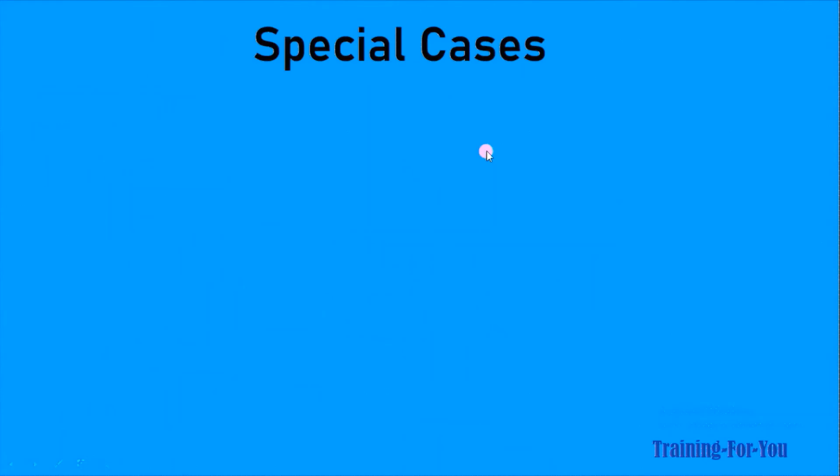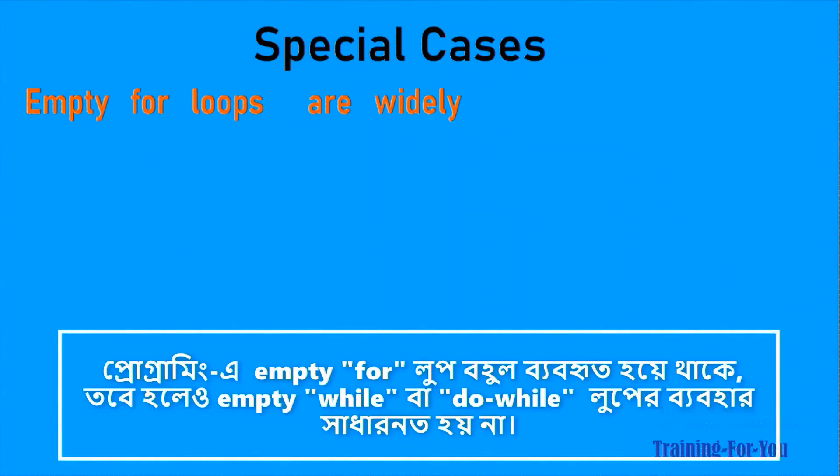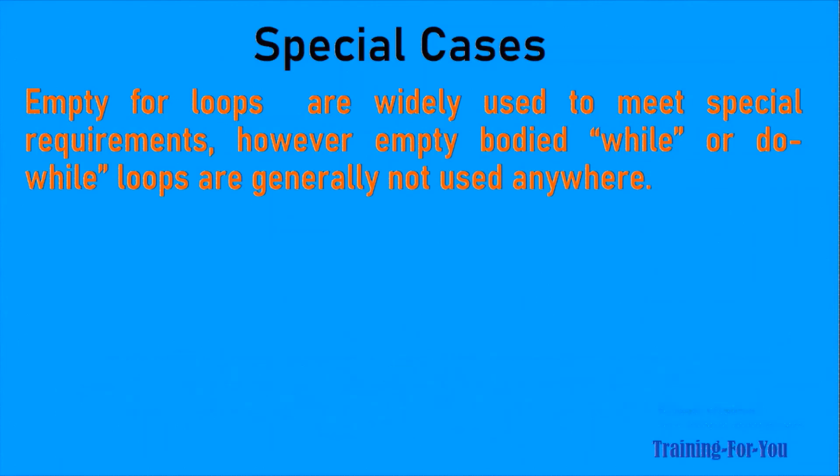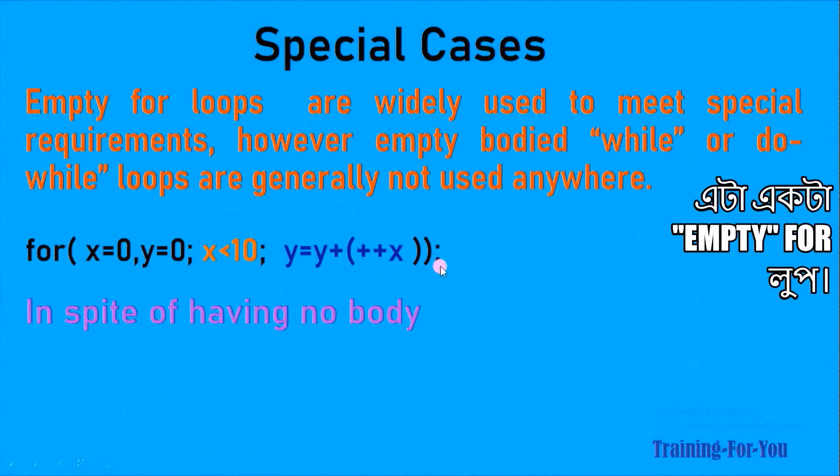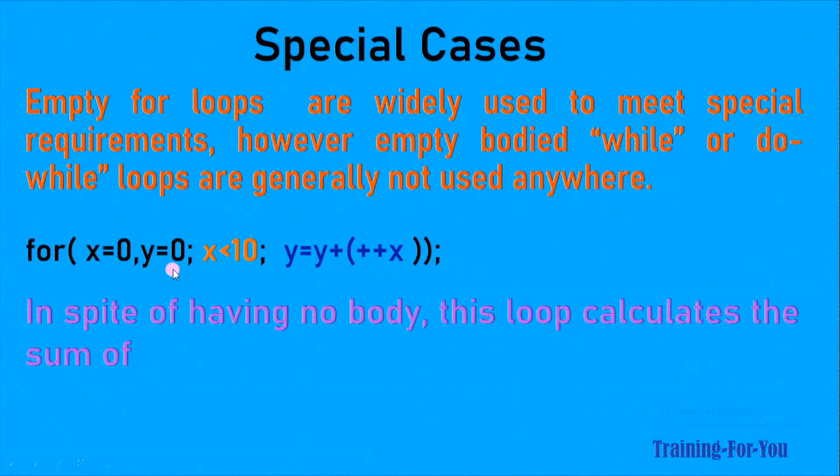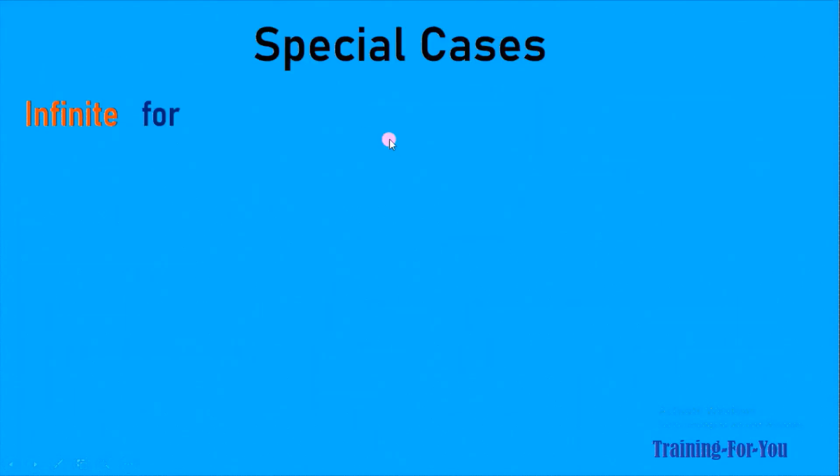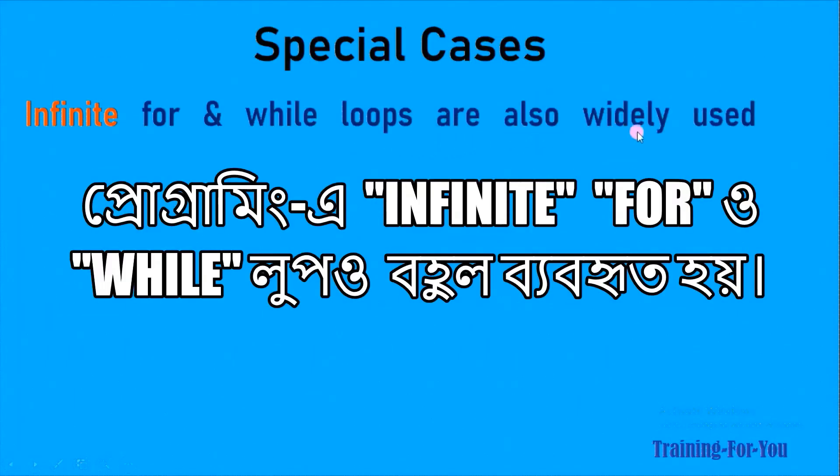There are some special cases. Empty for loops are widely used to meet special requirements. However, empty bodied while or do while loops are generally not used anywhere. This is an empty bodied for loop. When we put a semicolon here, it becomes an empty bodied for loop. In spite of having no body, this loop calculates the sum of the first 10 natural numbers and stores it in the variable.